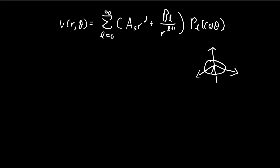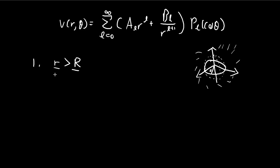The configuration we have is a disk with a radius R. In part (a), we need to find the potential where small r is larger than the radius of the disk. Imagine a hypothetical sphere wrapped around this disk — we're considering the potential outside of this hypothetical sphere, in the region where small r is greater than big R.